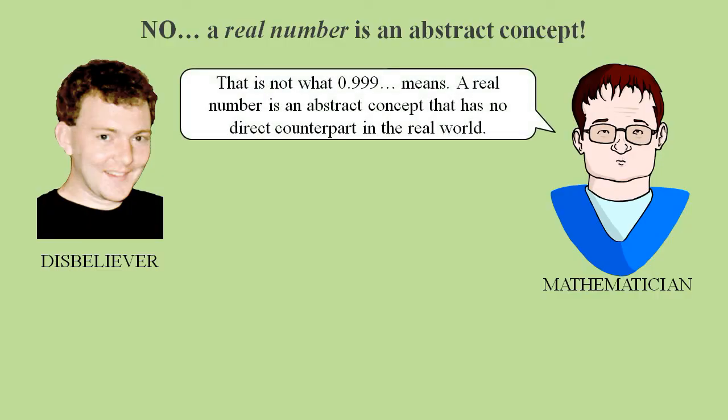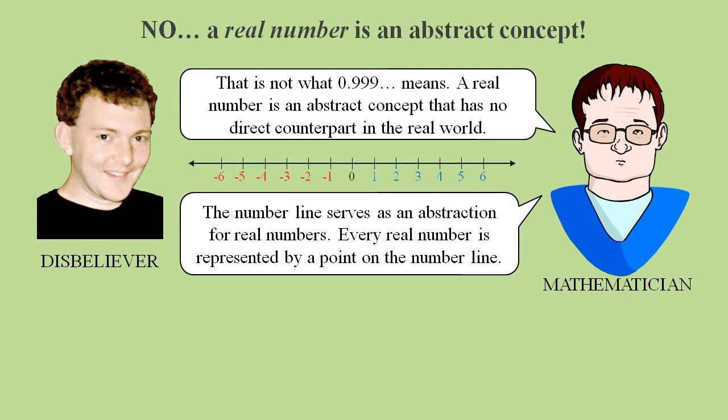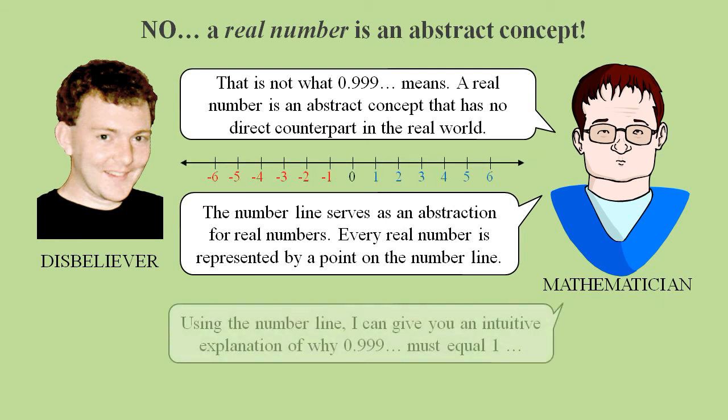The mathematicians will tell us, no, that's not what 0.9 recurring means at all. It represents an abstract object called a real number. And we can think of real numbers as being points on a number line. Using this number line concept, they claim there's an intuitive way to show 0.9 recurring must equal 1.